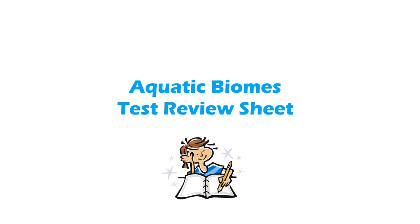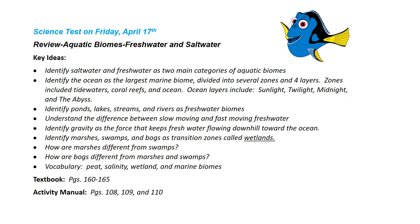Okay, let's get back to our review. I'd like for you to pull out the Aquatic Biomes test review sheet — you may need a piece of paper and pencil to take a few notes. As you review, I want you to consider the key ideas listed here, as well as textbook pages 160 through 165, and the activity sheets we've used in our study on freshwater and saltwater biomes. The first key idea: it's important that you know the difference between a saltwater and freshwater biome, because those are the two main categories. The second bullet point: identify the ocean as the largest marine biome, and it's divided into several zones and four layers. Those zones include tidewaters, coral reefs, and the ocean.